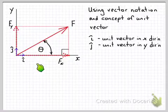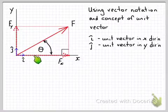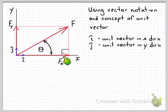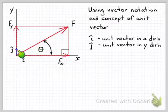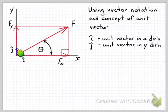So using this vector notation we can say that our x component here is a vector of magnitude fx in the direction of the unit vector i and similarly our y component of the force fy has a magnitude fy and it's in the direction of the unit vector j.